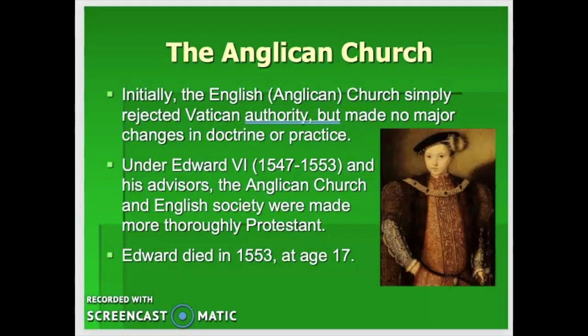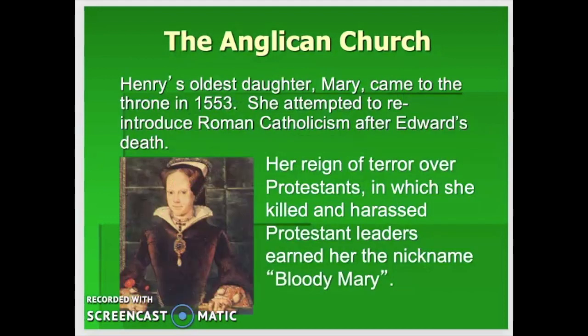Edward died in 1553 at age 17, causing a succession crisis. The next heir was Henry's oldest daughter Mary, the daughter of Catherine of Aragon, who was passionately Catholic. She eventually married the King of Spain, also passionately Catholic. She came to the throne in 1553 and in her five-year reign attempted to reintroduce Catholicism into England, burning pastors at the stake and imprisoning Christians — earning her the nickname Bloody Mary. That's also where the drink got its name.